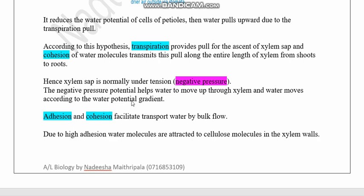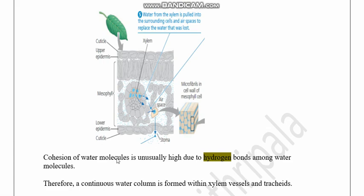This water movement occurs according to the water potential gradient. Adhesion and cohesion forces of water facilitate transport within the xylem by bulk flow. Adhesion is the attraction of water molecules to different molecules, and cohesion is the attraction between water molecules. Due to high adhesion forces, water molecules attract to cellulose molecules within the xylem wall. Water has high cohesion forces due to hydrogen bonds between water molecules, and together these forces form a continual water column within xylem tubes and tracheids.